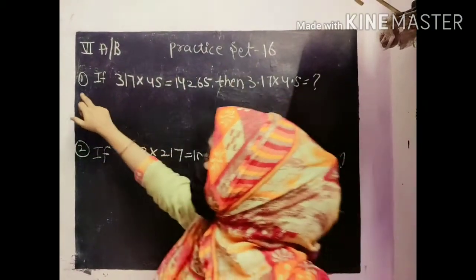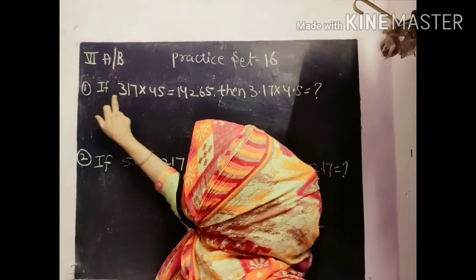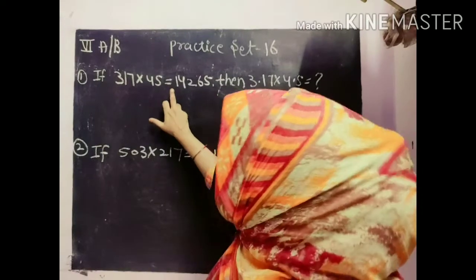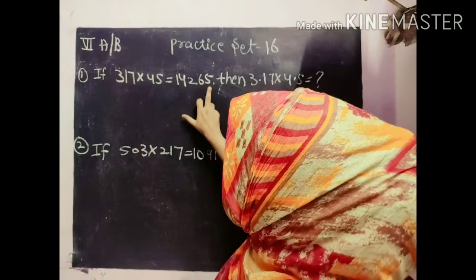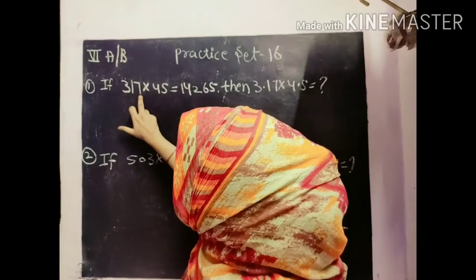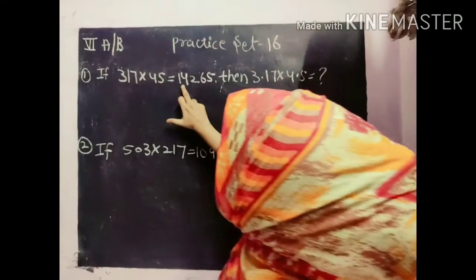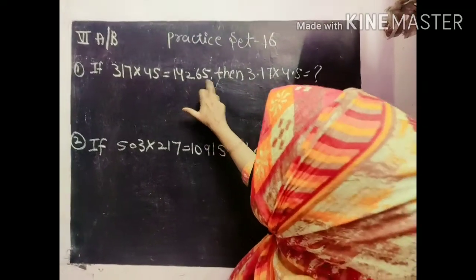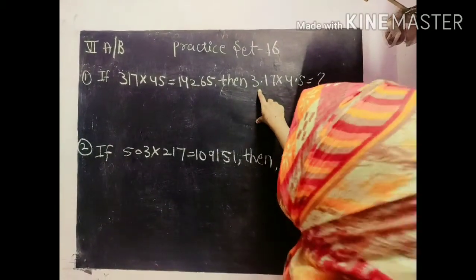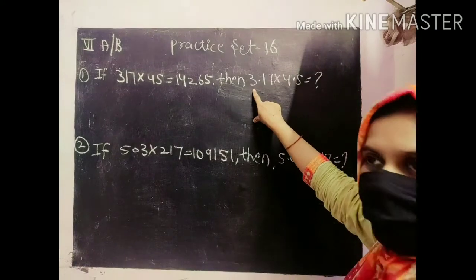In practice set number 16, the question number 1 is if 317 into 45 is equal to 14265, which means if we multiply 317 into 45 the answer will be 14265. Then if the question is in decimal form what will be the answer?